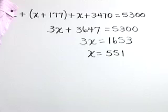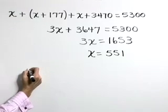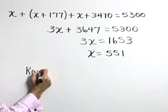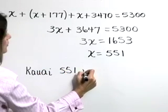X represents the area of Kauai, so the area of Kauai is 551 square miles.